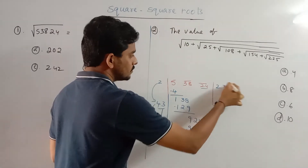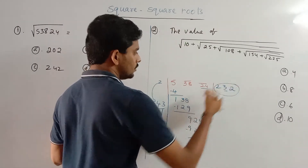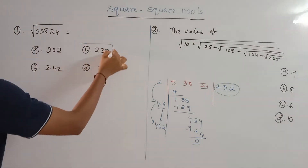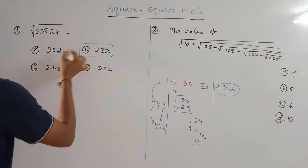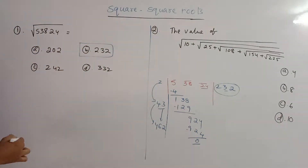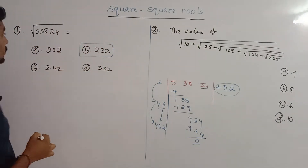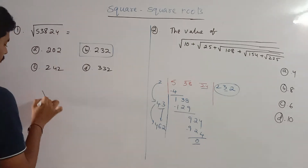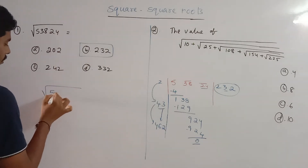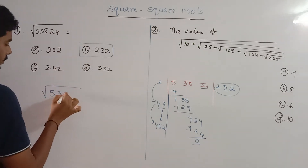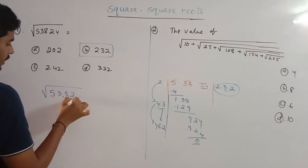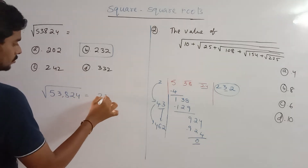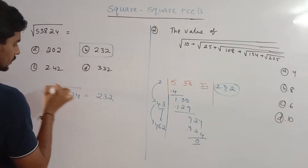232 squared equals 53824, so the square root of 53824 is equal to 232.